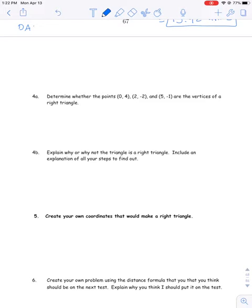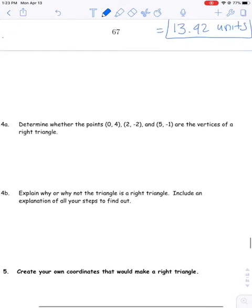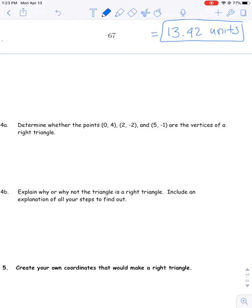Then you have to find the perimeter and decide if those numbers truly give you a right triangle or not. If you want to visualize it, you can go ahead and draw a graph — you don't need to, but I do think it's helpful to label them A, B, and C. Again, we want to find the distance between each of those segments. You have to find how far apart A and B are, how long segment BC is, and then CA.